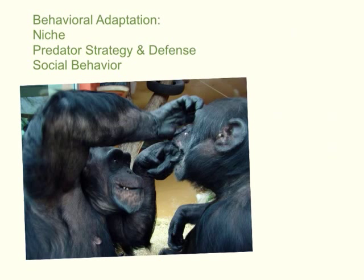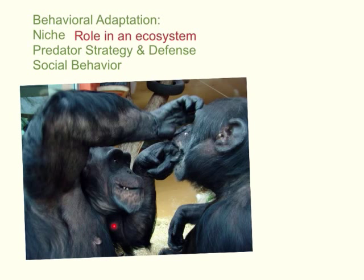Behavioral adaptations relate to what an animal is actually doing, and there are different examples. One is niche — an animal's niche is its role in an ecosystem. For example, looking at this picture of chimpanzees, you can see one chimpanzee is checking out the other's teeth. That might be its role in the ecosystem — like the dentist chimpanzee of the community. Everything in an ecosystem has a purpose or a role, and if it doesn't, it might not be able to survive long-term in that ecosystem.